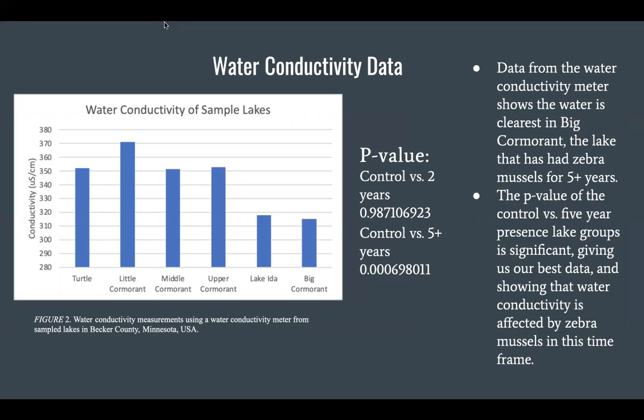To begin our discussion of the water conductivity data, this figure shows all of the measurements we collected, and the observed trend clearly appears to support the alternative hypothesis — that there is a change in the readings between lakes with and without zebra mussels. This observation is further backed up with statistical analysis conducted between the two control lakes, Turtle and Little Cormorant, compared to the lakes with five-year zebra mussel presence, Ida and Big Cormorant. The p-value was 0.000698, which supports the alternative hypothesis and offers the idea that zebra mussels have indeed had an effect on conductivity, specifically decreasing the conductivity rates.